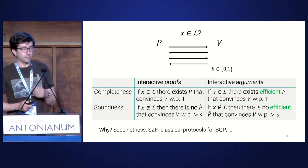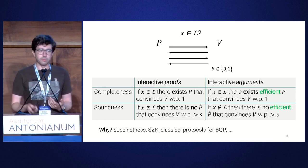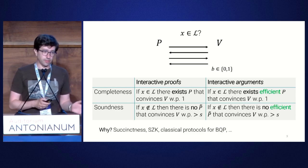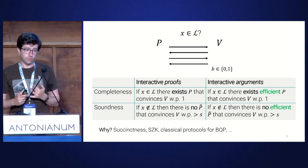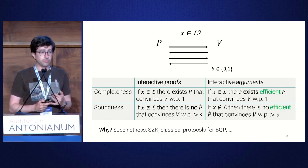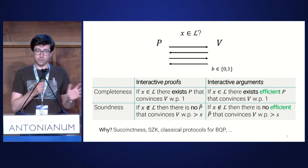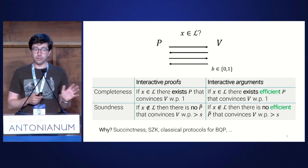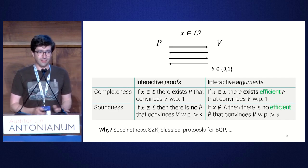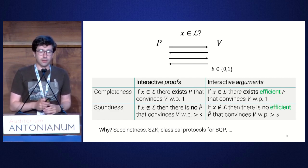Why consider interactive arguments? Given some reasonable complexity-theoretic conjectures, they are more powerful than interactive proofs. You can get succinct arguments for NP, which you cannot do with proof systems. You can get statistical zero knowledge. These classical protocols for BQP are also argument systems — their security is based on hardness of LWE — and we don't know how to do this in the single-prover statistical soundness setting.